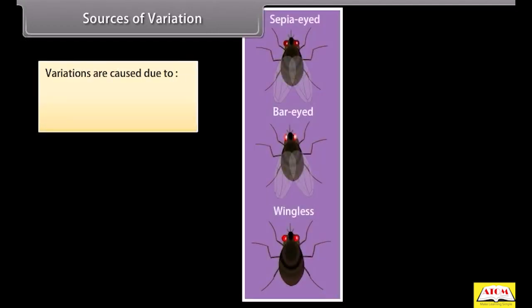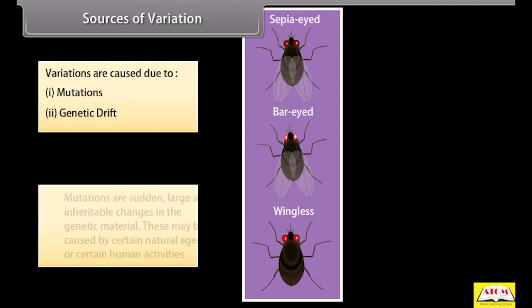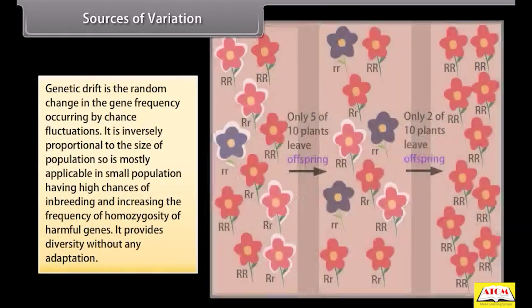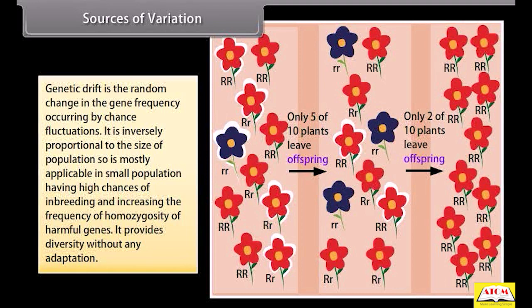Variations are caused due to mutations and genetic drift. Mutations are sudden, large, and inheritable changes in the genetic material, and may be caused by certain natural agents or human activities. Genetic drift is the random change in gene frequency occurring by chance fluctuations. It is inversely proportional to the size of the population and is mostly applicable in small populations, increasing the frequency of homozygosity of harmful genes.